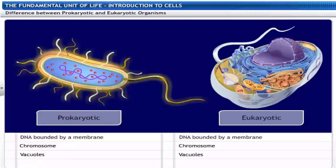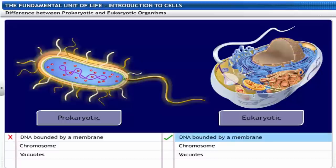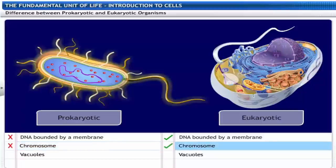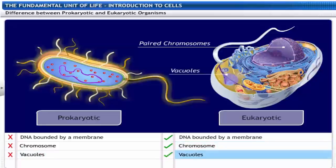Let's see the difference between prokaryotic and eukaryotic organisms. Prokaryotic DNA is not bounded by a membrane called nucleoid. Eukaryotic DNA is bounded by a nuclear membrane. Prokaryote has a single, circular DNA, while eukaryote has DNA in paired chromosomes. Prokaryotes do not have vacuoles while eukaryotes do have vacuoles.